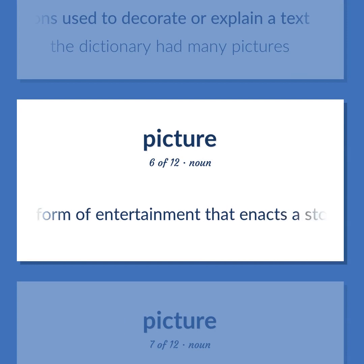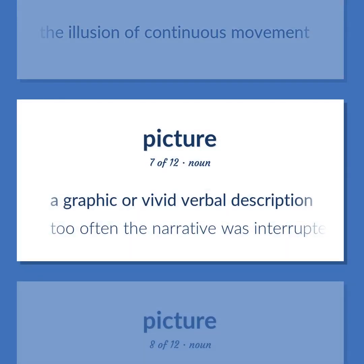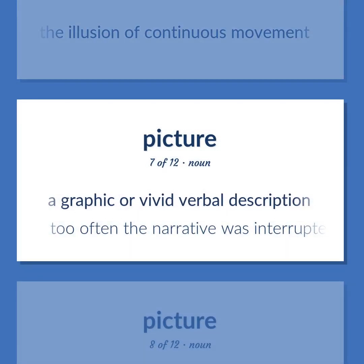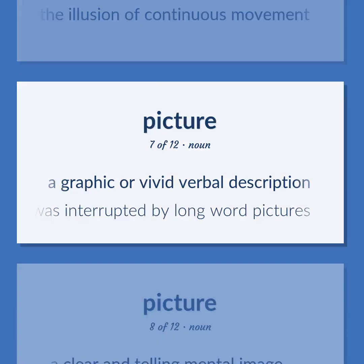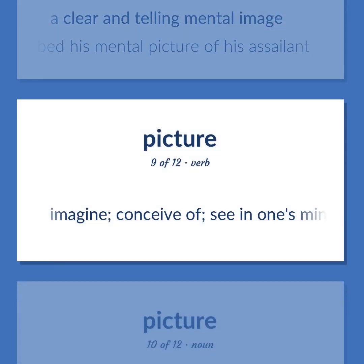Picture (noun): A form of entertainment that enacts a story by sound and a sequence of images giving the illusion of continuous movement. Also, a graphic or vivid verbal description. Example: Too often the narrative was interrupted by long word pictures. Also, a clear and telling mental image. Example: He described his mental picture of his assailant. Picture (verb): Imagine; conceive of; see in one's mind.